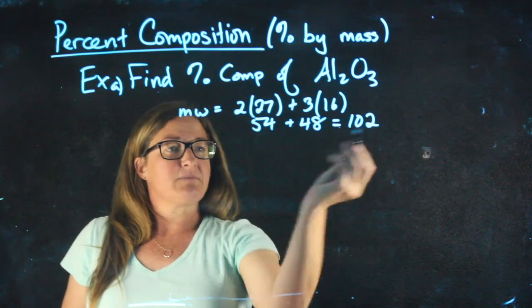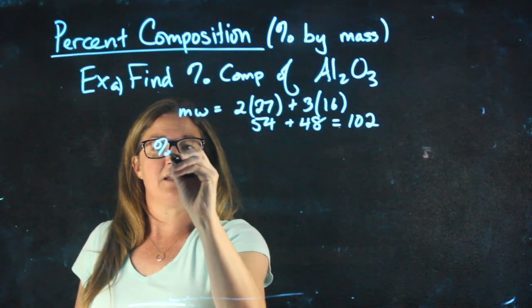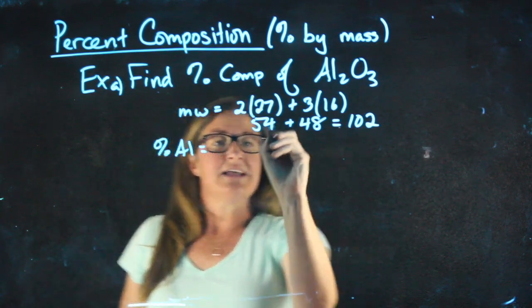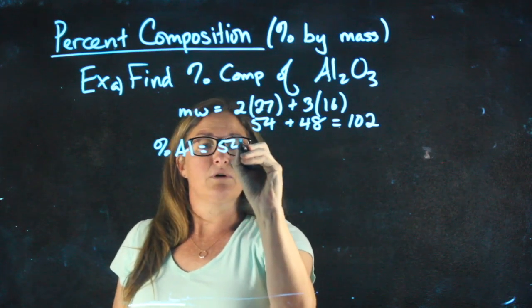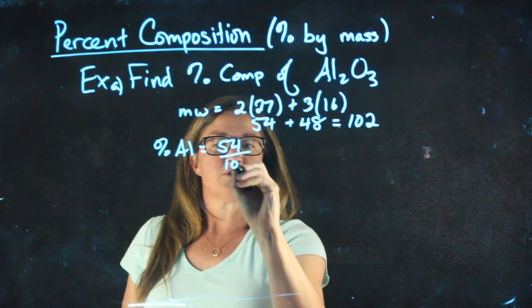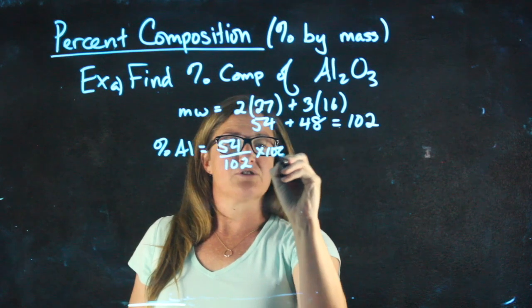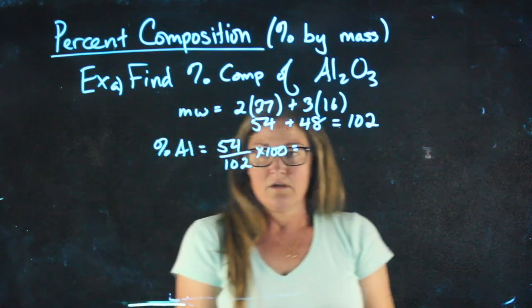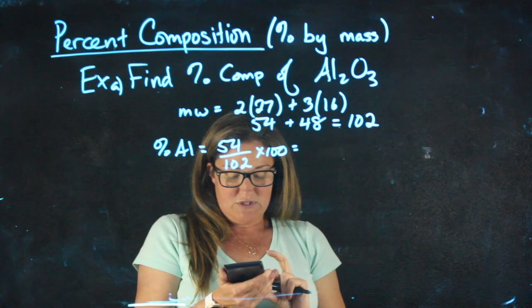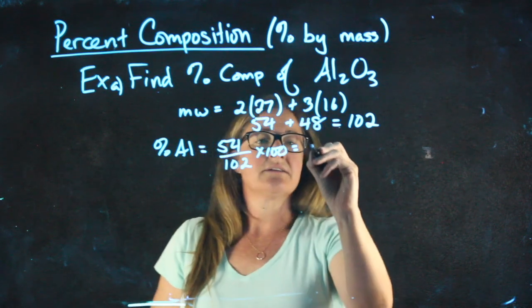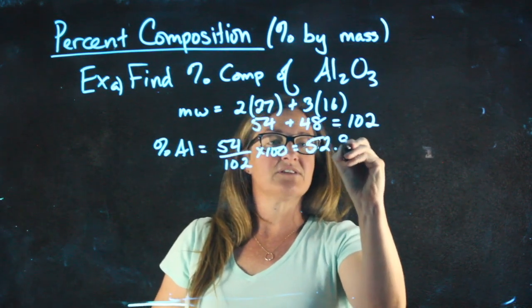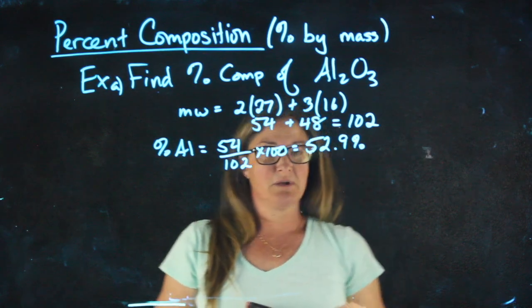If I were to find the percent composition, if I wanted the percent aluminum, I take the molecular weight of all of the aluminums, put it over the total, and multiply by 100. So 54 divided by 102 times 100 tells me that this compound is 52.9 percent aluminum.